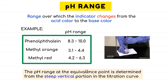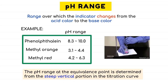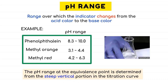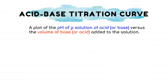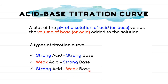The pH range at the equivalence point, where the salt is formed, is determined from the steep vertical portions in the titration curve we are going to learn. An acid-base titration curve is a plot of the pH of the solution (the analyte) versus the volume of solution added (the titrant). There are three types of titration curve: strong acid and strong base, which leads to a neutral salt with pH equal to 7; weak acid and strong base, which gives a basic salt with pH greater than 7; and strong acid and weak base, which forms an acidic salt with pH less than 7.